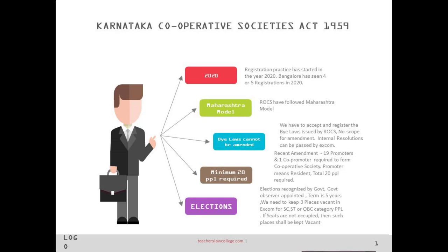After we submit the bylaws and names, we have to call a government officer to prepare a feasibility report. After he prepares the feasibility report, a temporary registration certificate is issued. Then we have to collect one thousand rupees from every resident, open a bank account, deposit the amount, and issue share certificates to every resident printed in the name of the cooperative society.